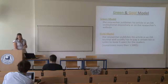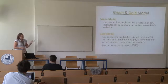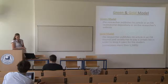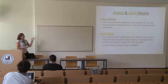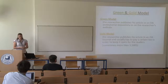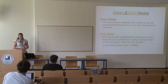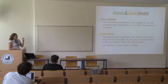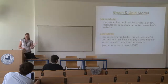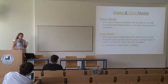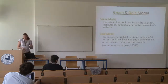In the green model, the researcher publishes their article by depositing it in an open access repository — usually an institutional depository or the researcher's own website. In the gold model, the researcher publishes their article in an open access journal and usually has to pay a certain fee, which can reach $1,500 US dollars and sometimes even more.